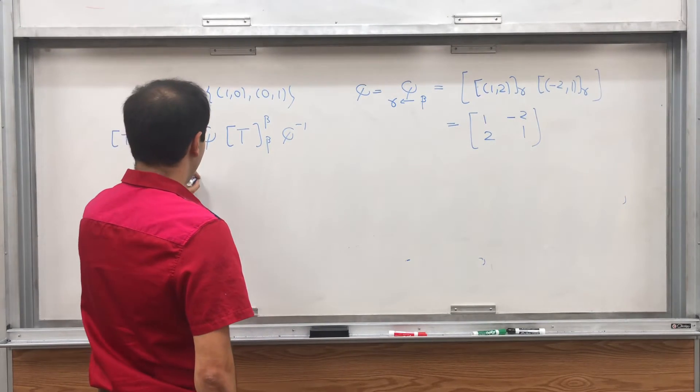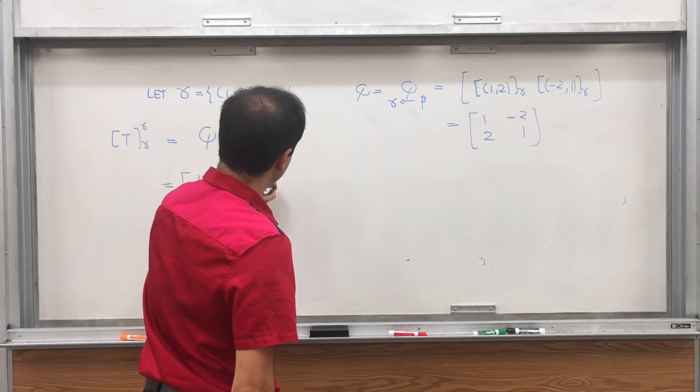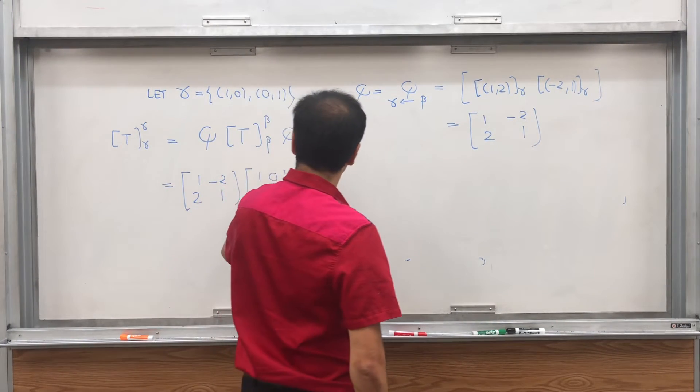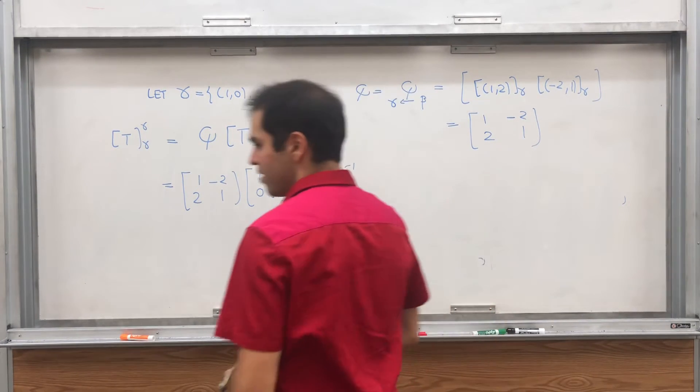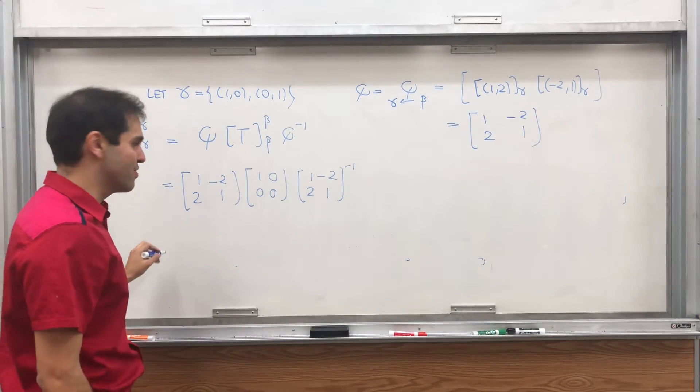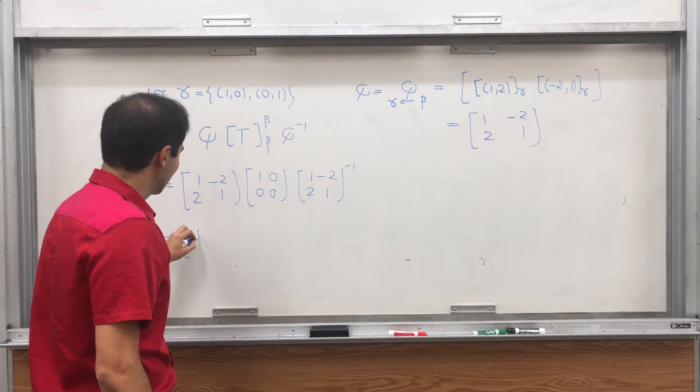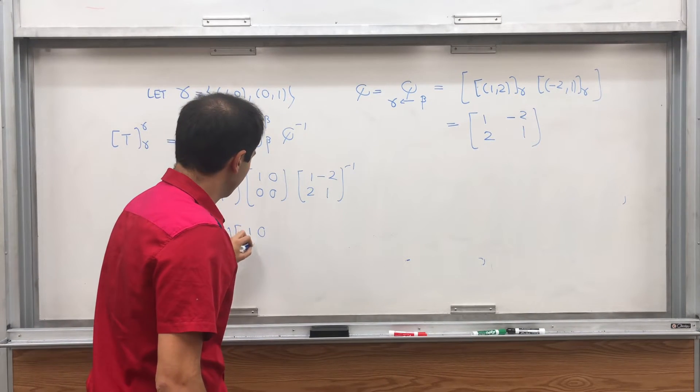And then all you need to do is apply this formula, so this is 1, 2, minus 2, 1, the matrix we already found, 1, 0, 0, 0, and then 1, minus 2, 2, 1, inverse. And I have not worked out the formula, so let's be surprised together. So this is 1, minus 2, 2, 1, 1, 0, 0, 0.